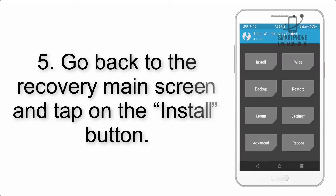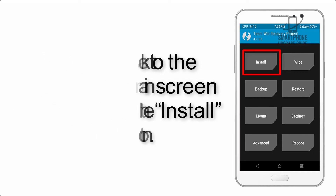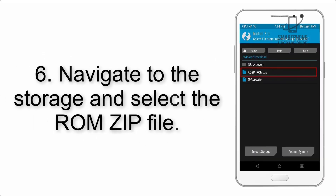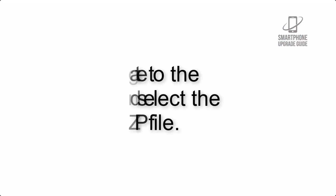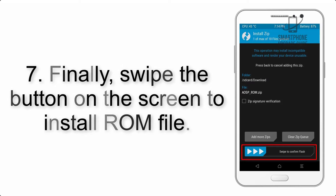Step 4: Swipe the button to wipe the device. Step 5: Go back to the recovery main screen and tap on the Install button. Step 6: Navigate to the storage and select the ROM zip file.